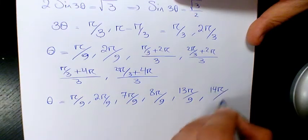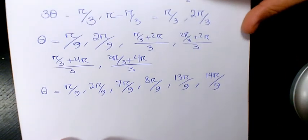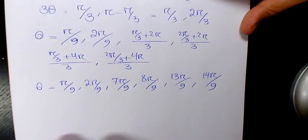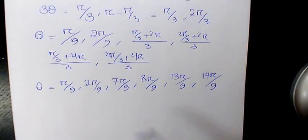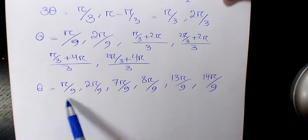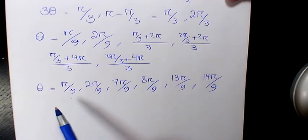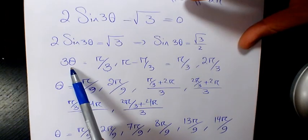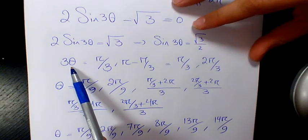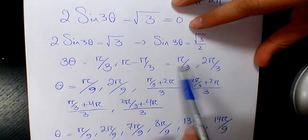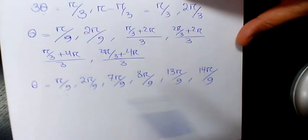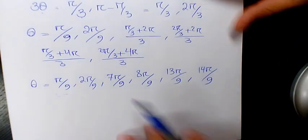And here you have 14π over 9. So that's going to be the six answers to this question. As you see here, all of them are between zero and 2π. The reason we have six answers in here instead of two answers, because we had 3θ in the beginning. So since it was 3θ, instead of two answers, we're going to end up having six answers.